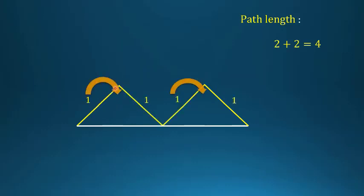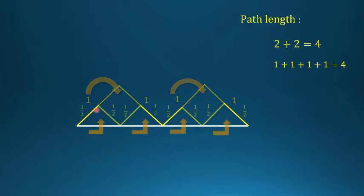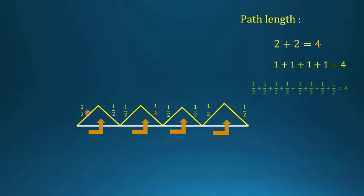In the next step it is 1 + 1 + 1 + 1 = 4 again. If we keep removing corners, in the next step we have eight segments each of length 1/2, giving 8 × (1/2) = 4 again. We always get 4 at every step, all the way out to infinity — the perimeter of the yellow path is always 4.